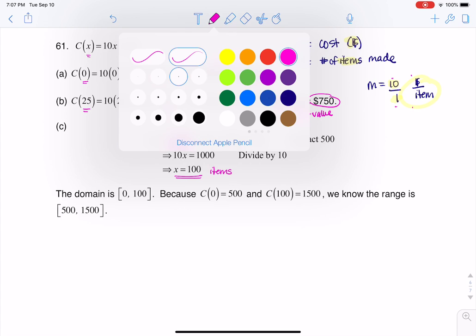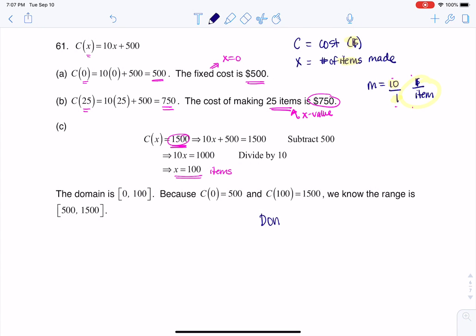So we have to figure out what the domain and the range are. Don't forget domain, it's always your x values. And your range, we would say our y values. But for this particular problem, we don't have the letter y anymore. We have c values, cost values. So let's see what our possible x values are.